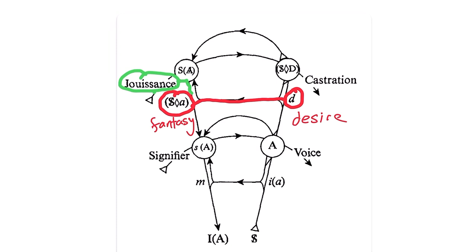You can see how the connection between desire and fantasy parallels the imaginary relation on the bottom half of the graph. Indeed, the symbol here includes the little a, suggesting an imaginary component to fantasy, but now in relation to the split subject.